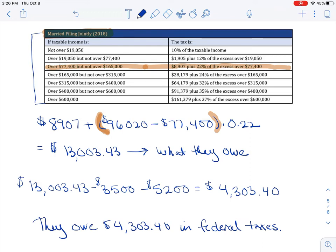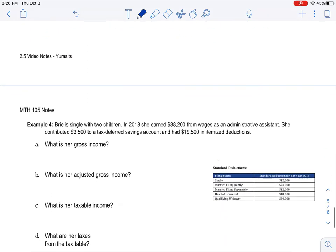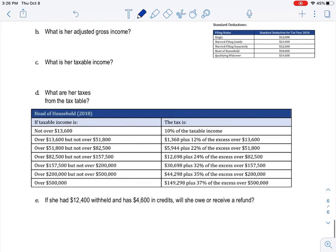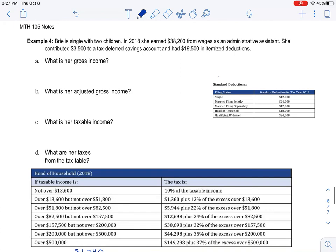So, what I'm going to encourage you to do is maybe pause the video and try example four on your own. And then see if you did it right. Before you pause me and leave me, I just want to change something. Okay, so pause or keep listening and we can do this one together. Bree is single with two children. In 2018, she earned $38,200 from wages as an administrative assistant. She contributed $3,500 in a tax-deferred savings account. And then she went ahead and itemized to see if she could save more money that way. And she found out that her deductions added up to $19,500.